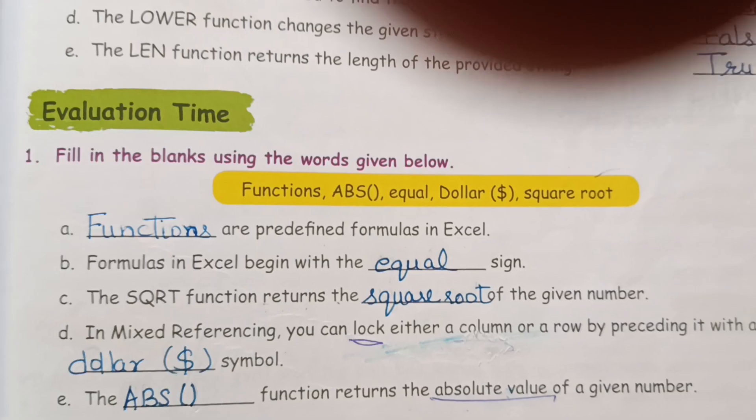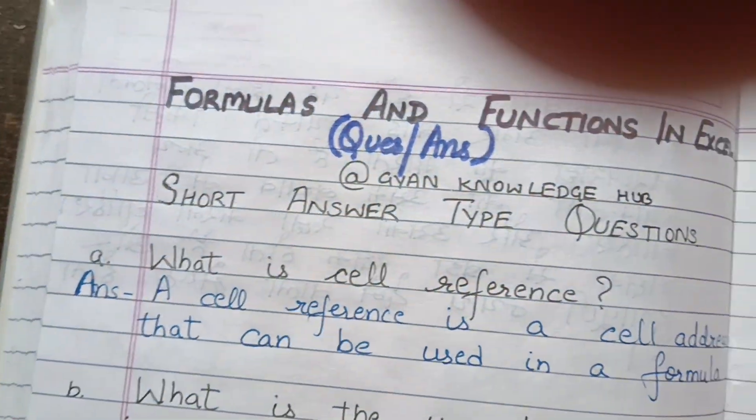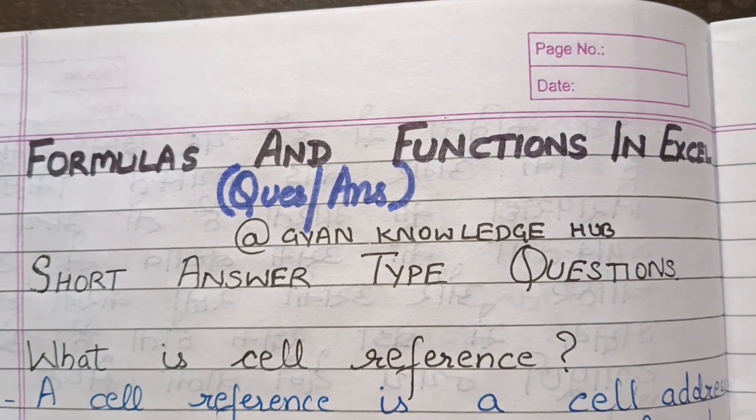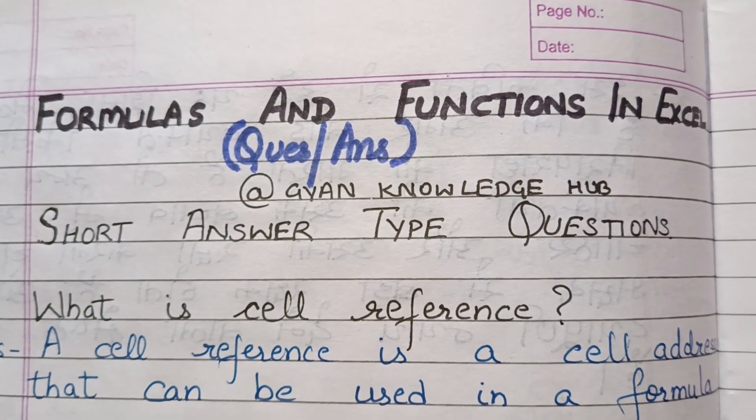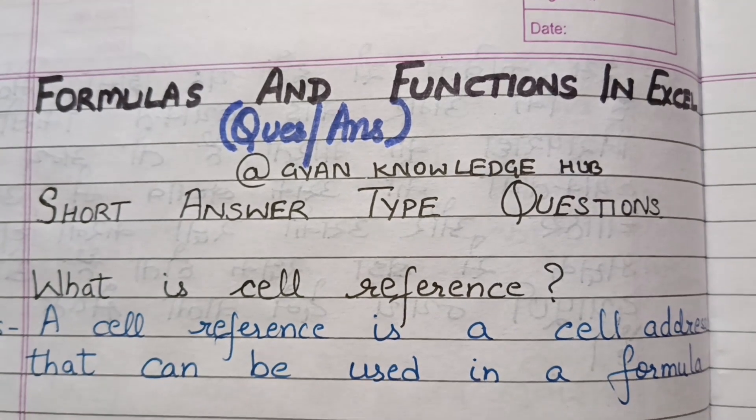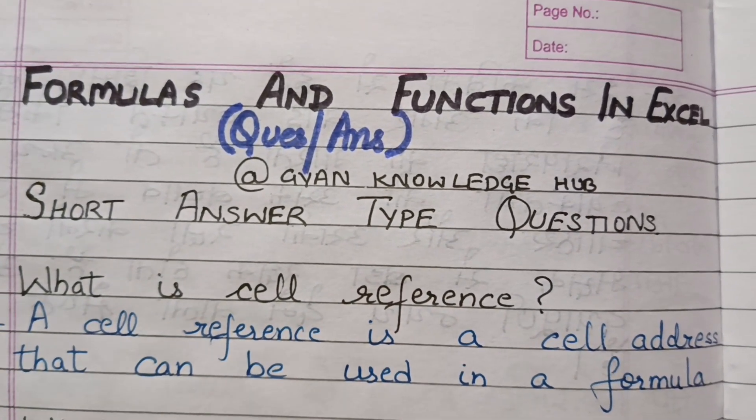The ABS function returns the absolute value of a given number. Next we come to the question answers. So the first question is, what is cell reference? A cell reference is a cell address that can be used in a formula.